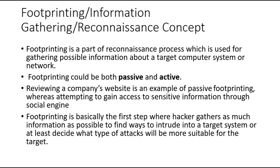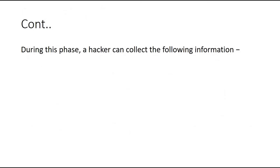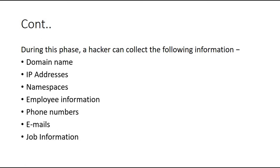Footprinting is basically the first step where hackers gather as much information as possible to find ways to intrude into a target system, or at least decide what type of attacks will be more suitable. During this phase, a hacker can collect information such as domain names, IP addresses, namespaces, employee information, phone numbers, emails, job information, and even employee IDs — and much more about the target.